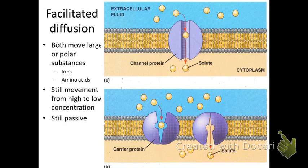Facilitated diffusion is still diffusion — still moving from high to low concentration, still passive. But it is a way to move polar substances and large substances like ions and amino acids. Since you're consuming ions and amino acids all the time, their concentrations are probably lower in your cells, so diffusion makes sense. They just need a way in, and that way in is through facilitated diffusion.